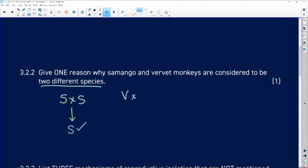If vervet monkeys mate with vervet monkeys, we have vervet monkey babies that are fertile. But if we have Samango monkeys mating with vervet monkeys, we produce a little hybrid.